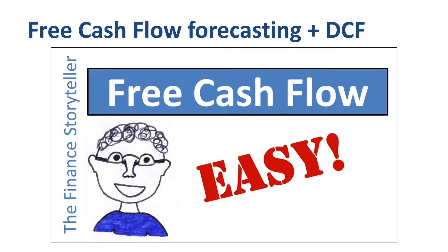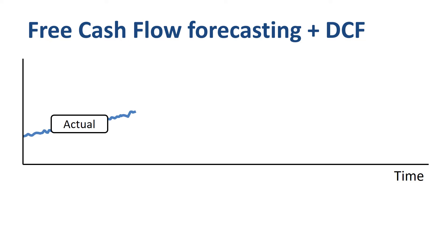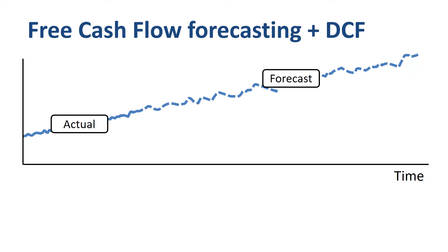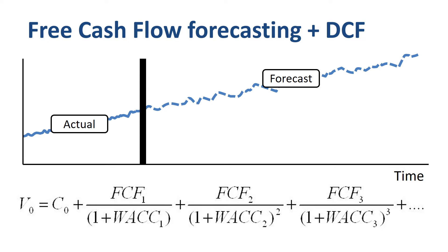Let's focus on the WACC part in this video. The solid blue line represents the historical actual results; the dotted line, the forecasted free cash flow; the black vertical line is today. The formula at the bottom is what the equity analyst is trying to fill. The value of a company today, V0, is seen as the cash the company currently has (C0) plus the estimates of future free cash flows discounted back using the weighted average cost of capital to their present value. That's where WACC gets used.